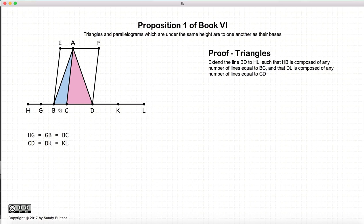And we are going to define points along this base such that HG equals GB equals BC. And we're going to form some more points such that DK equals KL is equal to CD.